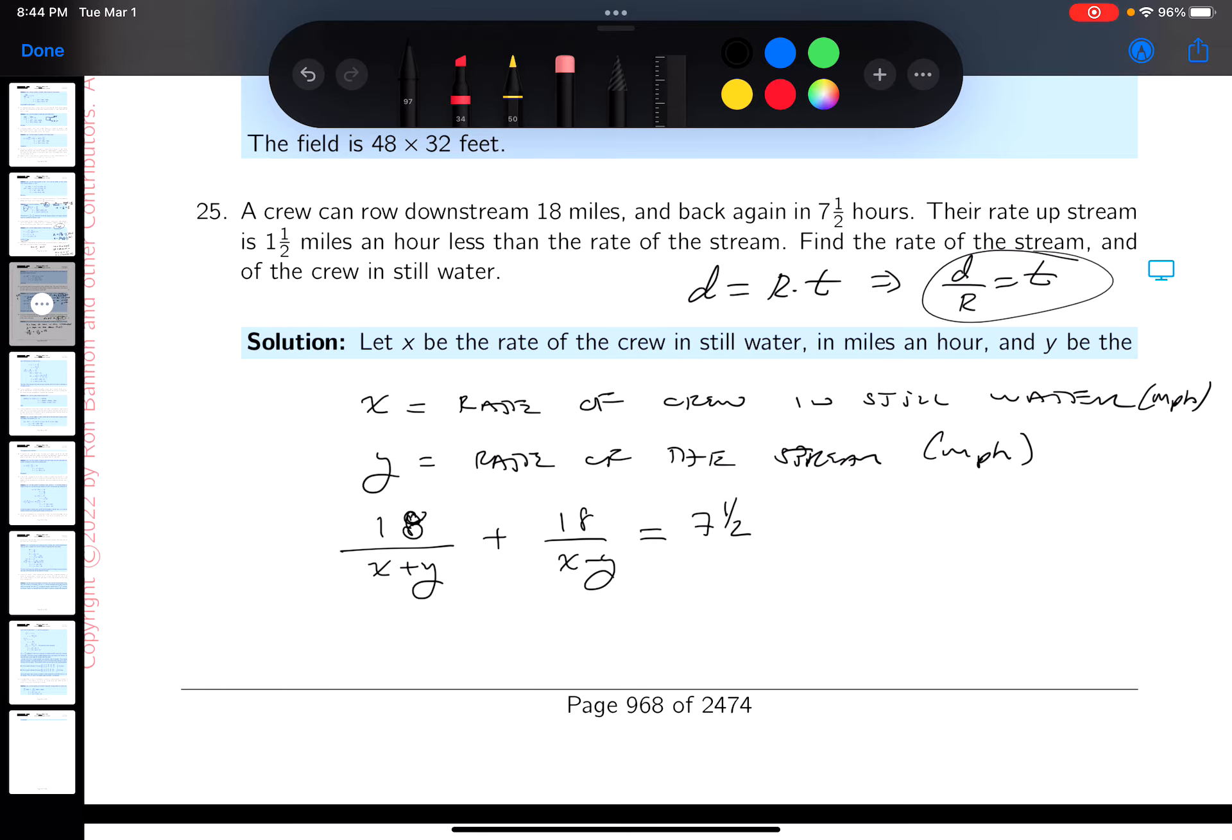There's something else they said: the rate upstream, which would be X minus Y going against the current, is 1.5 miles an hour less than the rate of the stream, which is Y. So now I'm getting two equations with two unknowns.